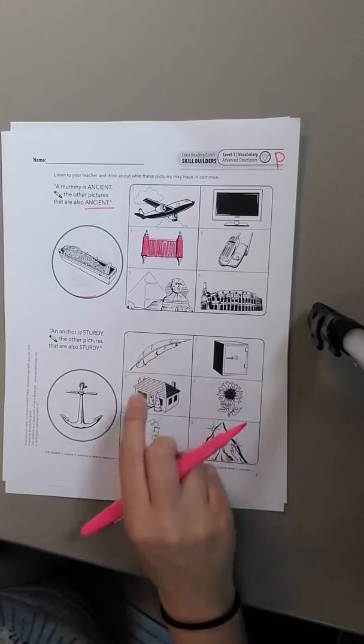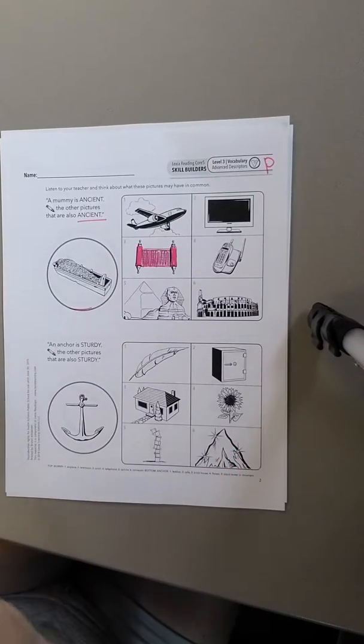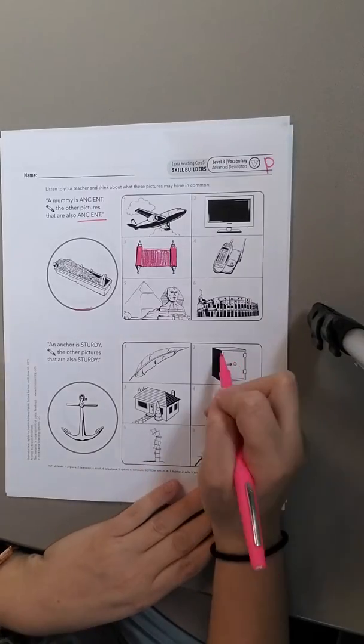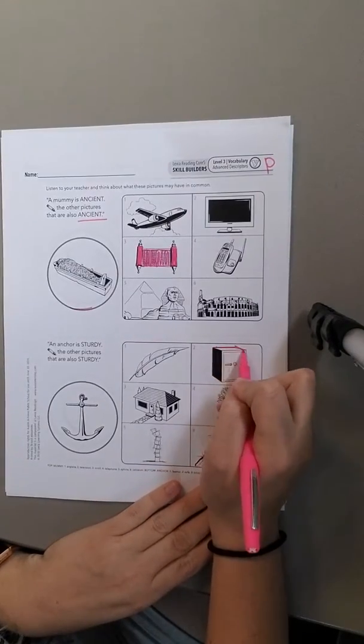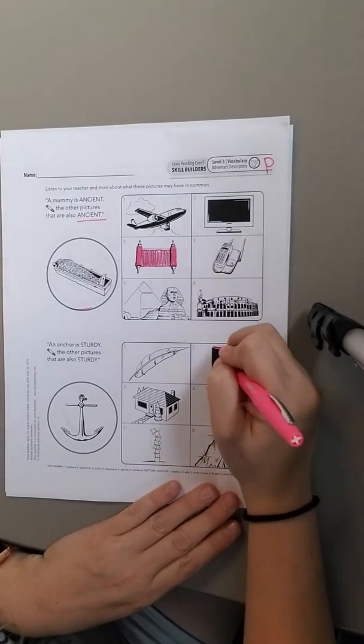So a feather, hmm, feathers are pretty light. They don't really help things to stay still. So let's try this, a safe. Oh, I know, a safe is where we keep valuable things. So it's got to be pretty sturdy to keep things safe, right? So I'm going to color in the safe.